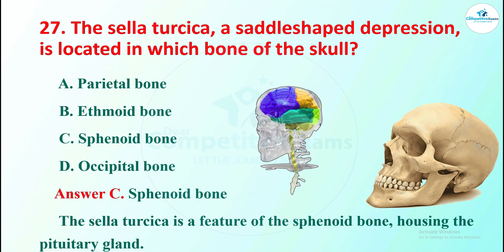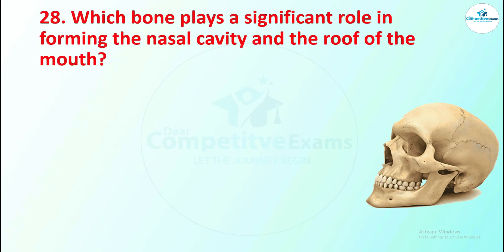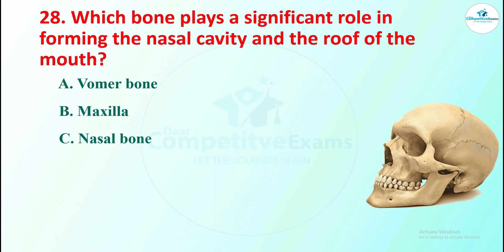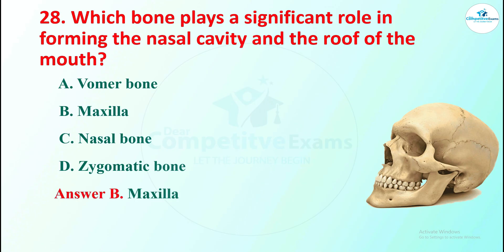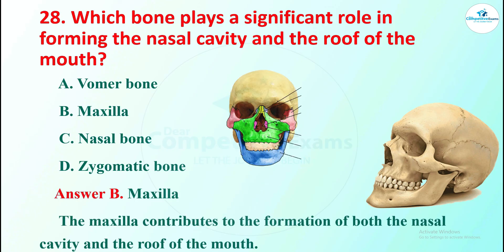Question 28: which bone plays a significant role in forming the nasal cavity and the roof of the mouth? Options are vomer bone, maxilla, nasal bone, or zygomatic bone. The right answer is maxilla. The maxilla contributes to the formation of both the nasal cavity and the roof of the mouth.